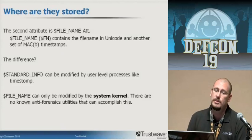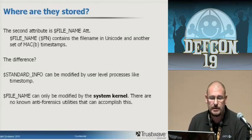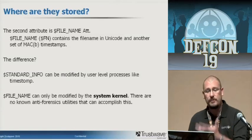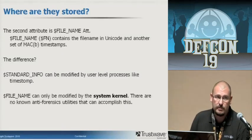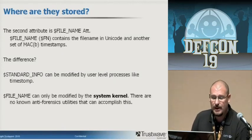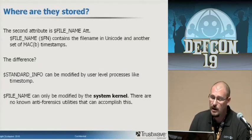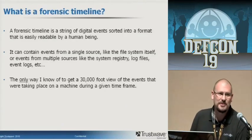The second attribute is the dollar file name attribute, or $FN. It contains the file name in Unicode and another set of MAC-B timestamps. It doesn't contain nearly as much information as SI, but the important thing is that it contains a second set of MAC timestamps. The key difference: standard info can be modified by user-level processes like Timestomp or any Perl scripts. Dollar file name can only be modified by the system kernel — there are no known utilities, antiforensic or not, that can accomplish this. At least not that I know of.